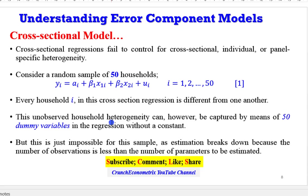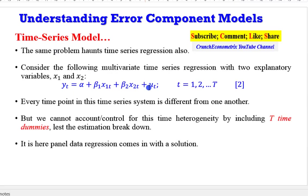it will require the inclusion of 50 dummy variables without a constant. If we are going to include a constant, then we will include 49 dummy variables. But this will be impossible to estimate. The reason being that the number of observations is quite lower than the number of parameters to be estimated.